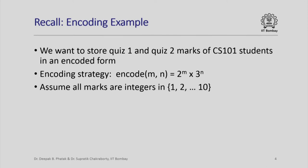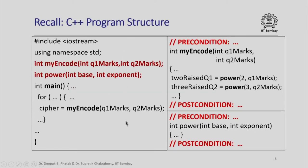Let us recall the encoding example that we had seen a few lectures back. We want to store quiz 1 and quiz 2 marks of all CS101 students in an encoded form. We had agreed to encode a pair of quiz marks in the following way: if m and n are quiz 1 and quiz 2 marks, then their encoded version would be 2 raised to m times 3 raised to n. We also assumed that all marks were integers in the range 1 through 10. Here is the structure of a simple C++ program that we looked at earlier for solving this problem.